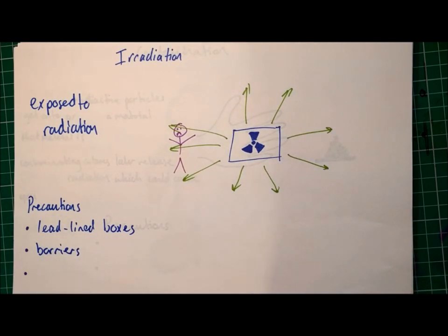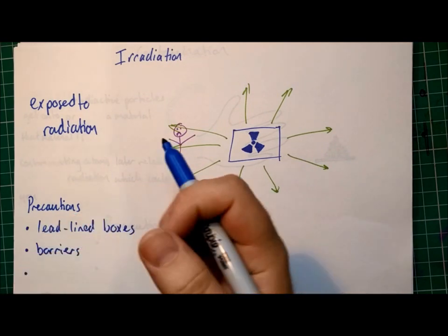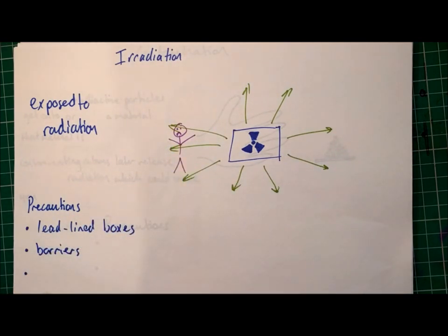The third one would be the use of remotely controlled arms. So this is literally, you'd use a joystick to control a robotic arm so that you don't even have to be in the same room as the radioactive source.